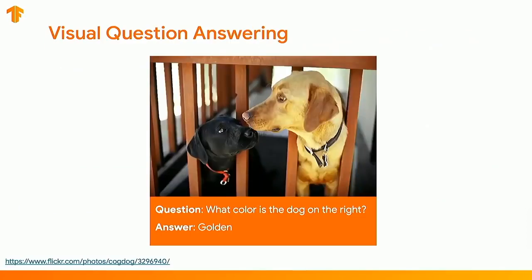I want to show you what a quick model would look like for something like visual question answering. A lot of the time in deep learning you spend time building image classifiers, but VQA is a slightly more sophisticated model. In VQA, you're given two inputs: an image — here a pair of dogs — and a question in natural language, like 'What color is the dog on the right?' To answer a question like this, you need a much more sophisticated model than just an image classifier.